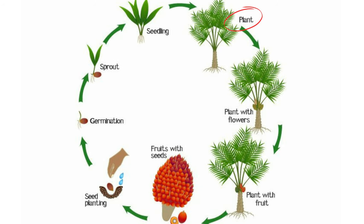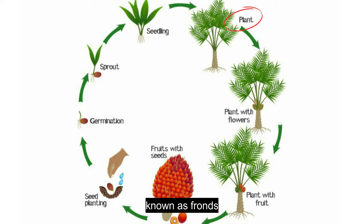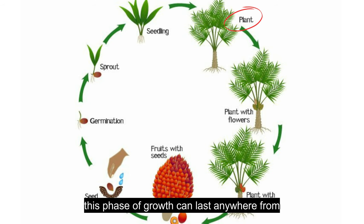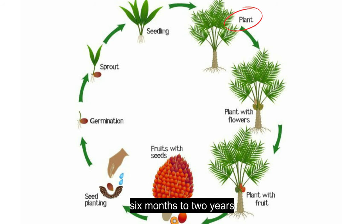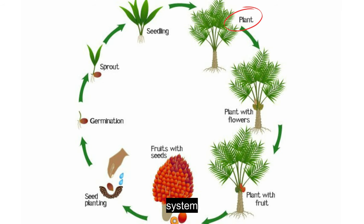Vegetative growth: once the young plant has emerged from the seed, it will begin to grow and develop leaves, known as fronds. This phase of growth can last anywhere from six months to two years, depending on the species of palm tree. During this time, the tree will also begin to develop its trunk and root system.